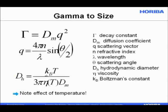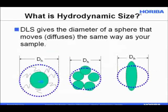Note the effect of temperature: it appears explicitly in the Stokes-Einstein equation, and the viscosity term is also a function of temperature. This means measurement results depend on the temperature of your suspension, so you want to ensure your suspension has reached thermal equilibrium before measuring. In practice, when you put a sample in the instrument, wait a few minutes before taking the measurement. Dynamic light scattering gives you a diameter of a sphere that moves or diffuses the same way as your sample.